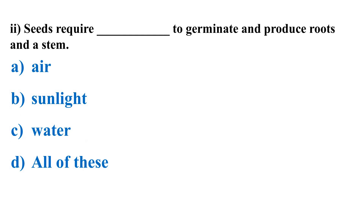Next question: Seeds require dash to germinate and produce roots and stem. Options are: air, sunlight, water, all of these.